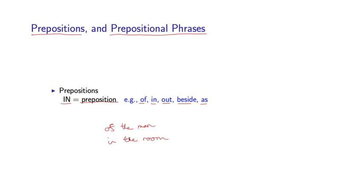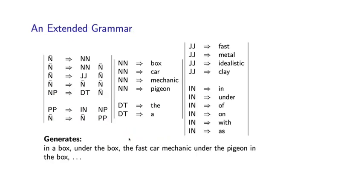Given the idea of prepositions, let's see how we can incorporate these in the grammar. What I've shown you here is the same grammar from the previous slide, except I'm going to add a couple of rules. I'm going to have a rule that says a PP, a prepositional phrase, can be formed from an IN followed by a noun phrase. I have various rules specifying that an IN, a preposition, can be words such as in, under, of, on, with, or as and so on.